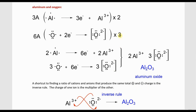This process is sometimes called finding the lowest common multiple. Six is the lowest common multiple of both two and three: 2×3=6 and 3×2=6. Note that 12 is also a common multiple of 2 and 3, but it is not the lowest common multiple. We write chemical formulas using the lowest common multiple, so Al₂O₃ rather than Al₄O₆.